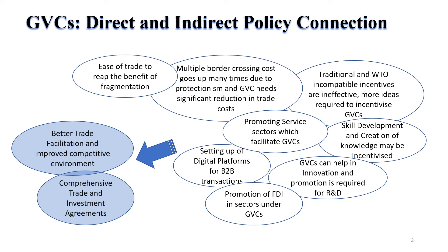Global value chain is based on the ideas of possible gains from fragmentation of production. If there is more ease to trade, then the benefit from fragmentation will be reaped easily. Generally, multiple border crossings mean more hassles, and at the same time, if there is a drive towards protectionism, then the cost of production goes up significantly.